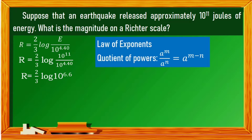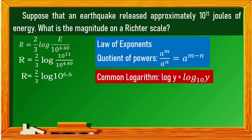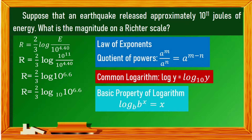When the base of a logarithm is not written, it is understood to be 10, and it is called a common logarithm. This is equivalent to log base 10 of 10 raised to the power of 6.6. One of the basic properties of logarithm is that log base b of b raised to the power of x equals x. Since the bases are equal, log base 10 of 10 raised to the power of 6.6 is simply 6.6.